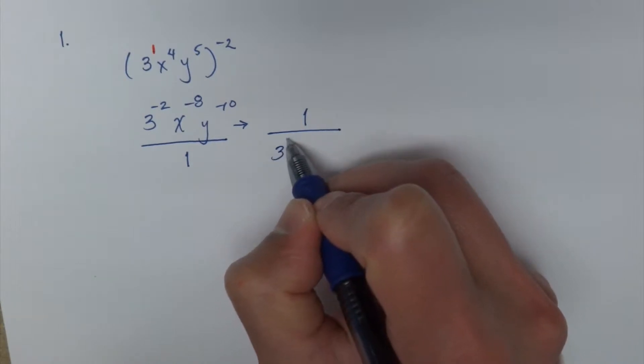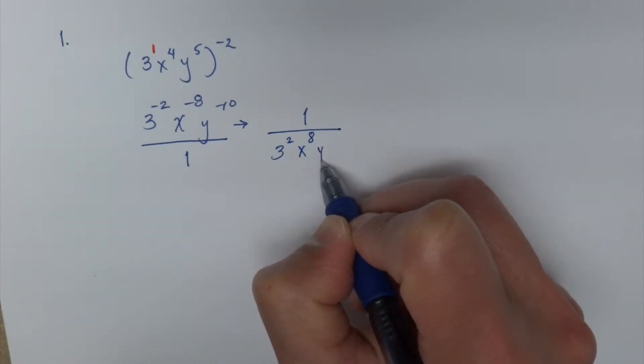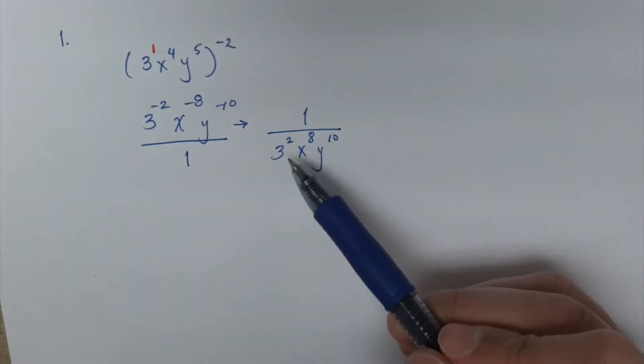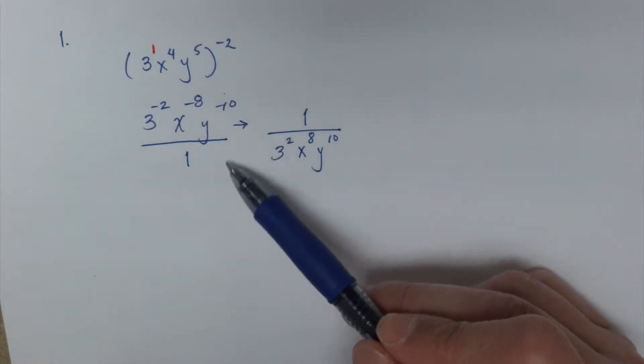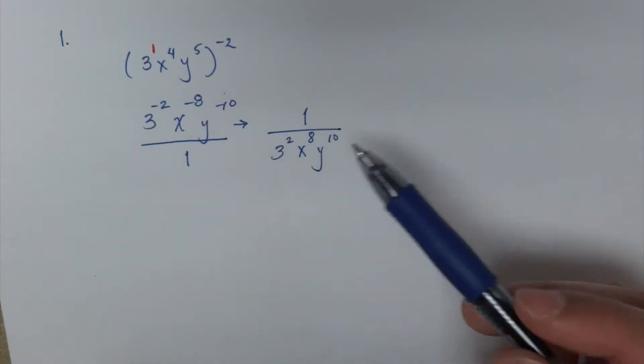So 1 over 3 squared, x to the positive 8 now and y to the 10th. Now remember whenever you do the reciprocal these negative exponents become positive.